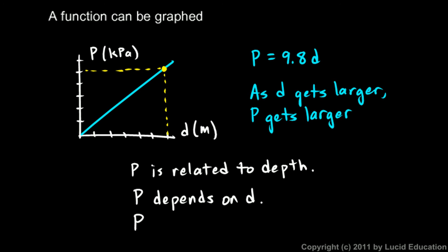And specifically, P and d are related by this equation that tells us mathematically how they are related. So P is related to d. You can also say P depends on d.